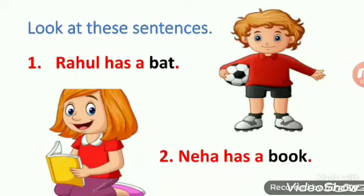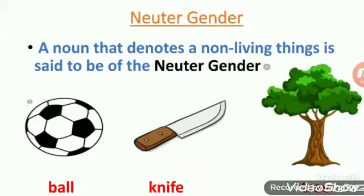Now look at these sentences. Rahul has a bat. Neha has a book. In the given sentences, bat and book are non-living things, so such nouns come under neuter gender. A noun that denotes a non-living thing is said to be of the neuter gender. They are neither male nor female. For example, ball, knife, tree, and such like.